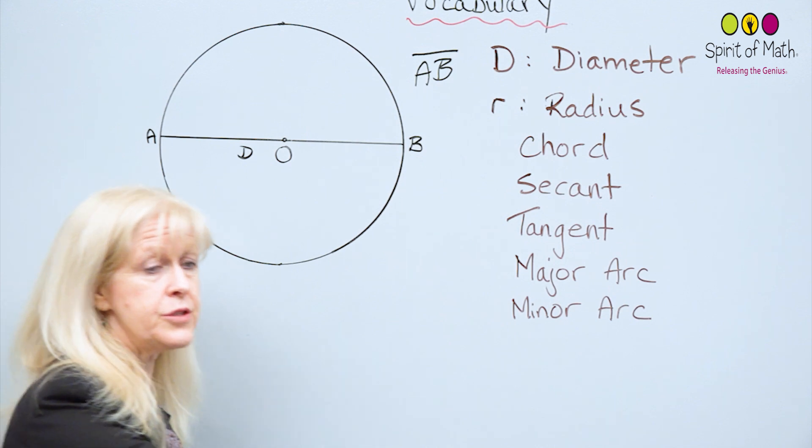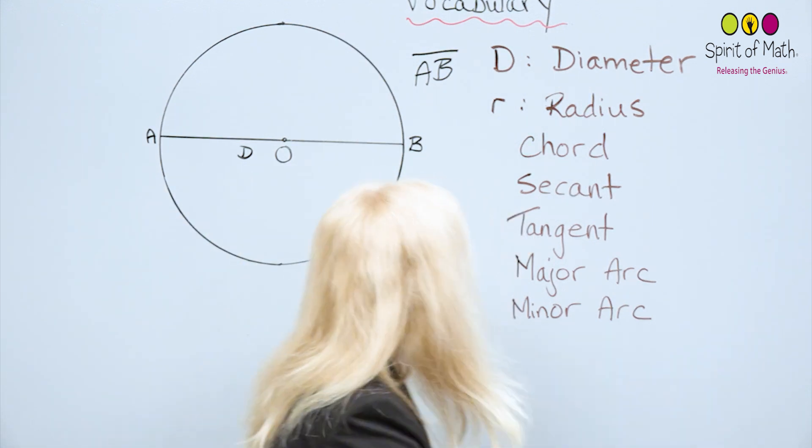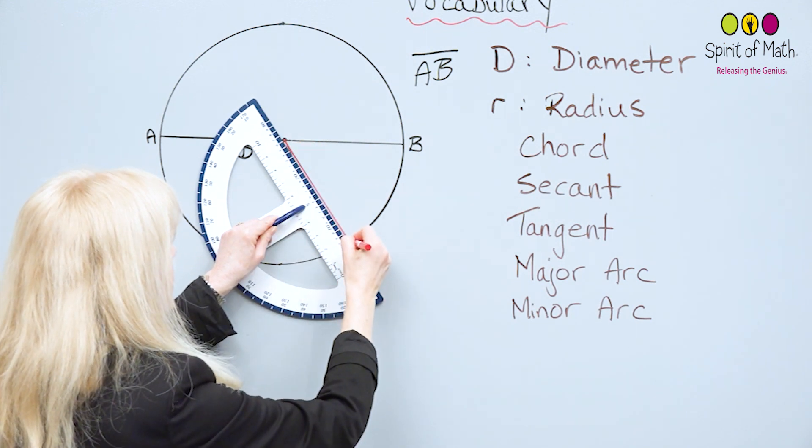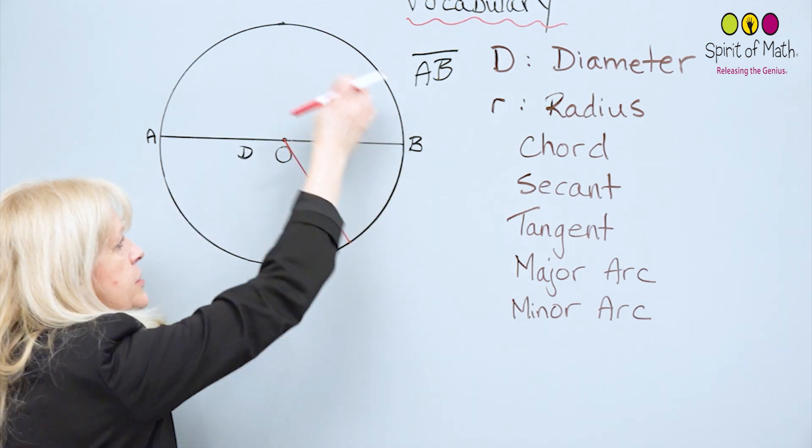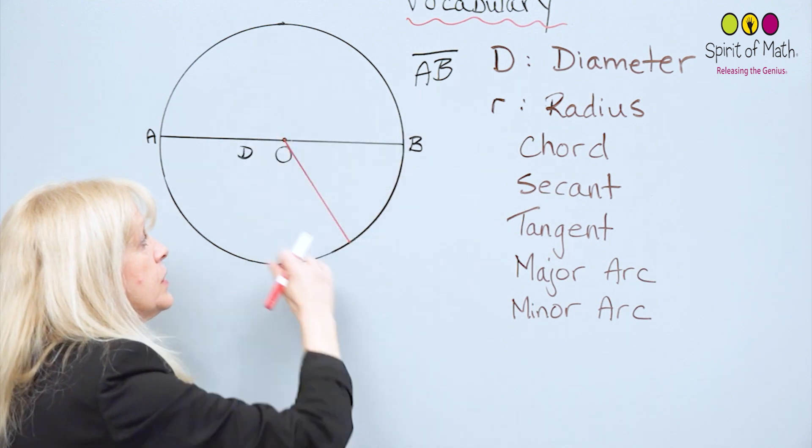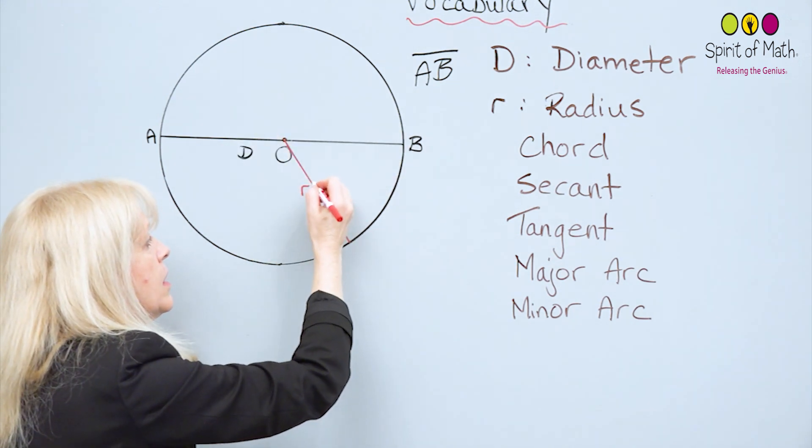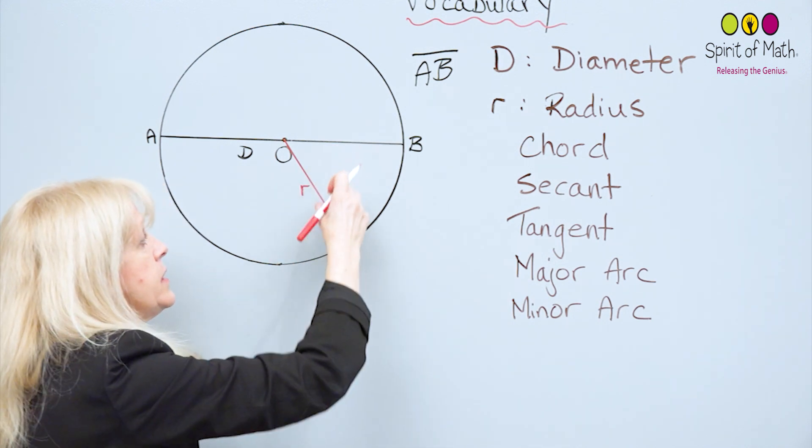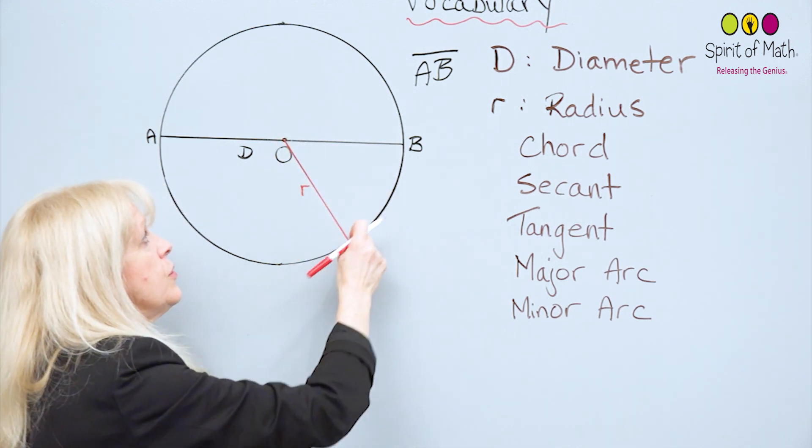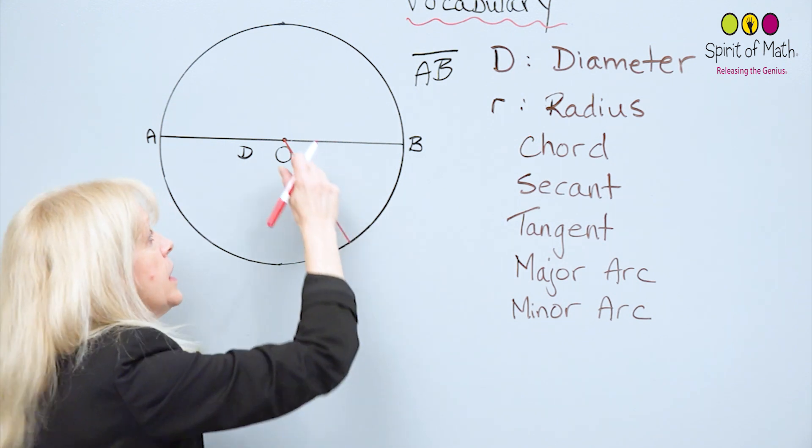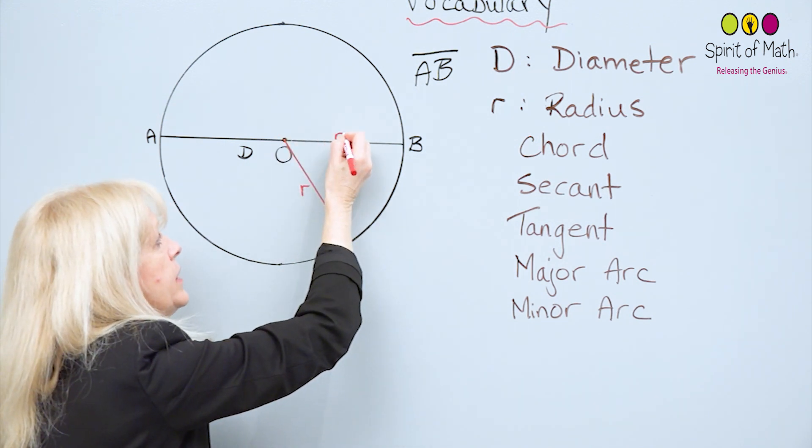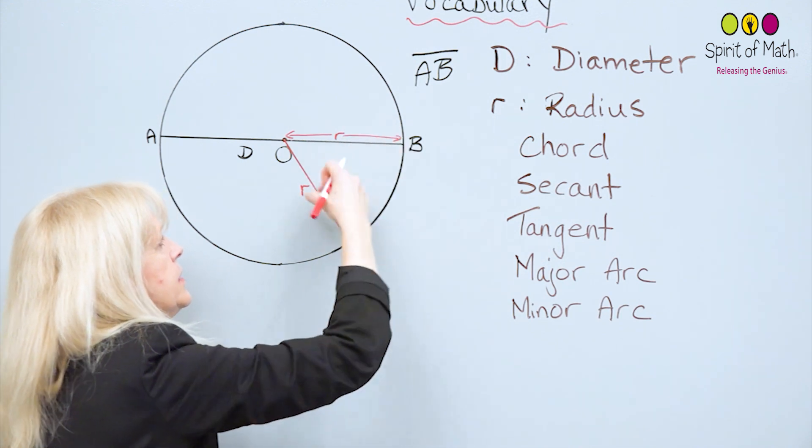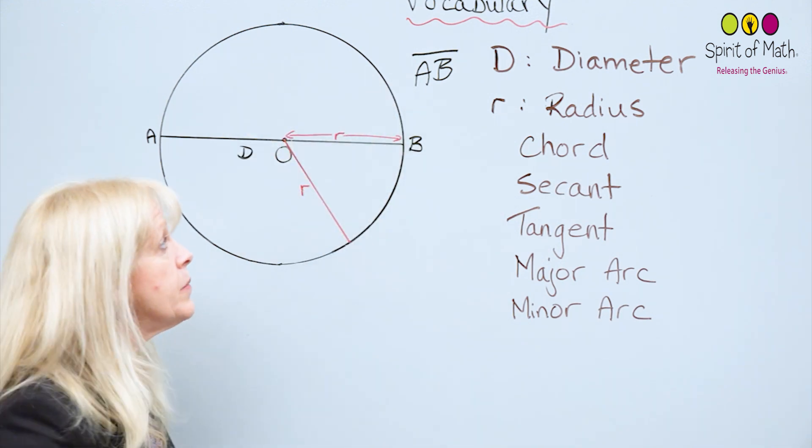Now, the radius, I'm going to draw in a different color, and the radius goes from the center to the outside, to the circle itself, and that is r. It's usually denoted with a small r, and so it is anywhere from the center to that circumference. You can have an r right in here, which goes from here to here, and it can go all the way around. So that's half the diameter.